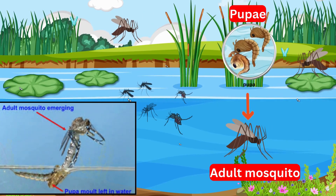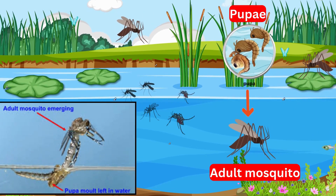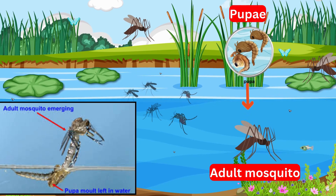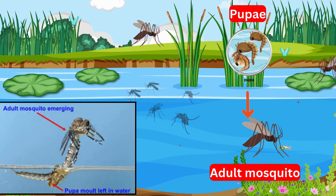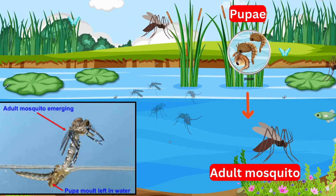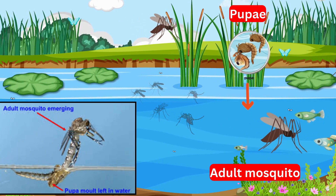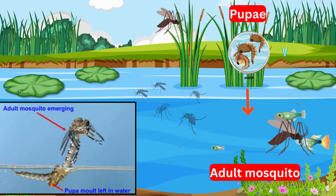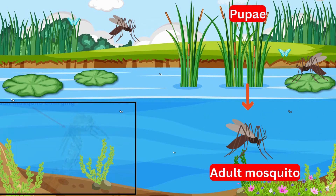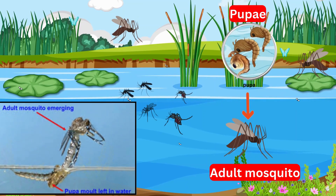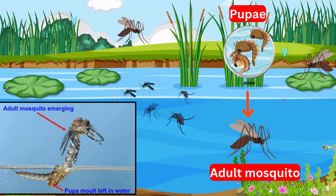Stage 4: Adult. Finally, the pupa transforms into an adult mosquito. The adult mosquito rests on the water's surface until it's strong enough to fly away.